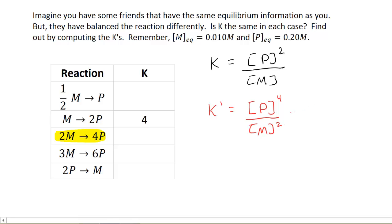If I write this, it's P to the fourth divided by M squared. But if I look carefully, this is the same as writing P squared divided by M, all squared. If you take a close look, that's just the old K. So my new K prime equals K raised to the power of two.